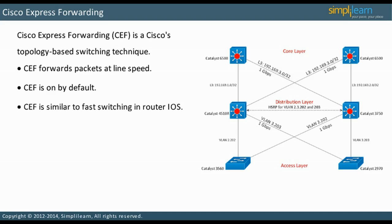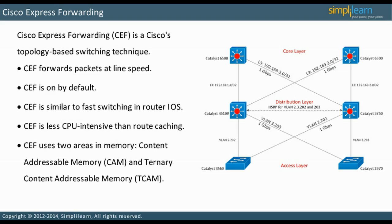CEF is similar to fast switching in router IOS. It is less CPU-intensive than route caching. CEF uses two areas in memory: Content Addressable Memory, or CAM, and Ternary Content Addressable Memory, or TCAM. Let us look at them in the next slide.